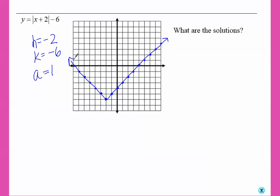And the problem asks, what are the solutions? And remember that solutions are the same thing as x-intercepts. So our solutions to that equation are x equals 4 and negative 7.